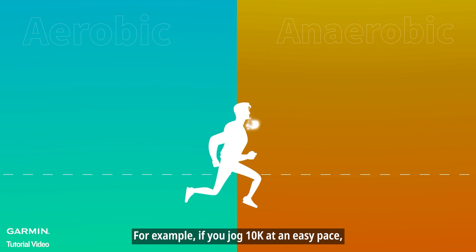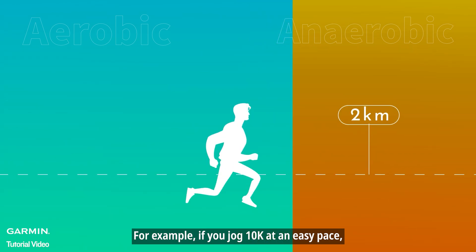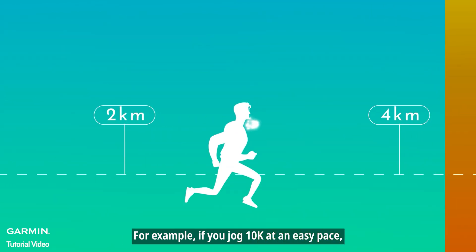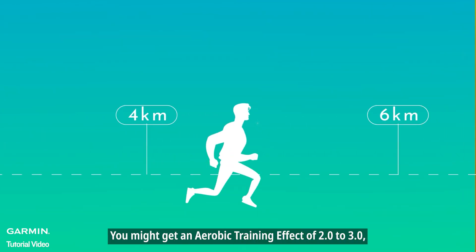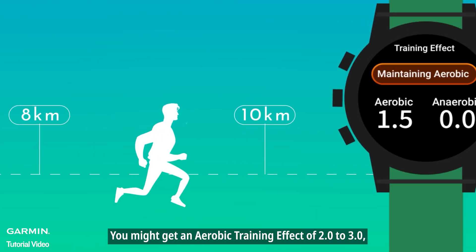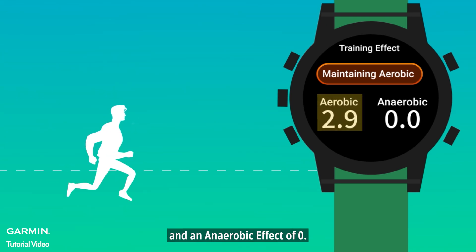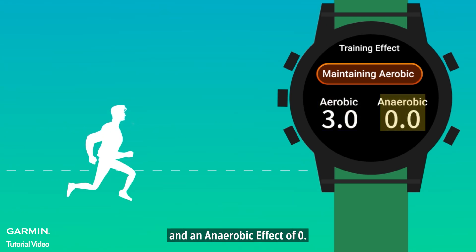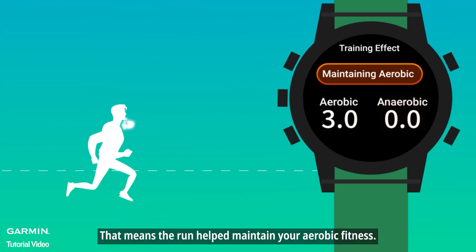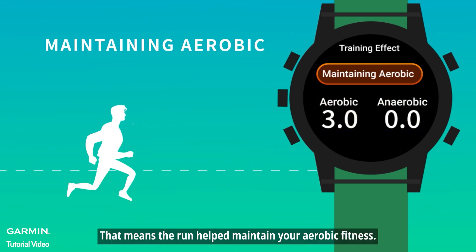For example, if you jog 10k at an easy pace, you might get an aerobic training effect of 2.0 to 3.0 and an anaerobic effect of 0. That means the run helped maintain your aerobic fitness.